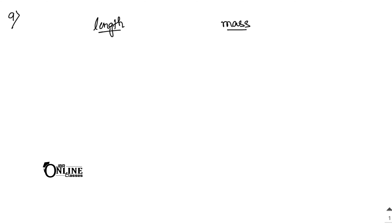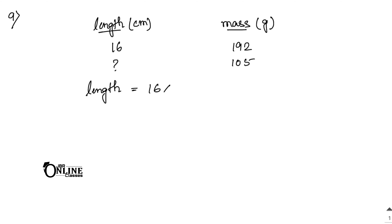Sum number 9: the mass of an aluminum rod varies directly with its length. Set up two columns — length in centimeters and mass in grams. When length equals 16 centimeters, mass is 192 grams. Find the length of the rod whose mass is 105 grams. Length equals 16 multiplied by 105 divided by 192. Since 192 divided by 16 equals 12, this gives 8.75 centimeters as the answer.